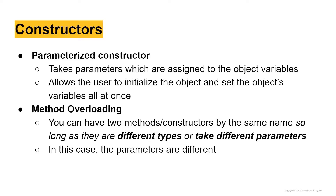Another thing to talk about is method overloading. You can have two methods or constructors with the same name so long as they take different parameters. So we're going to have a default constructor and a parameterized constructor both named 'Animal', and this is possible because they take different parameters.